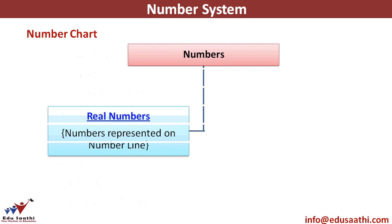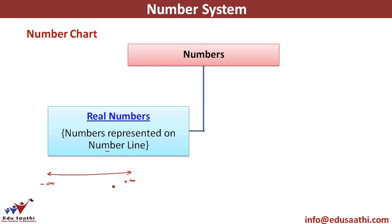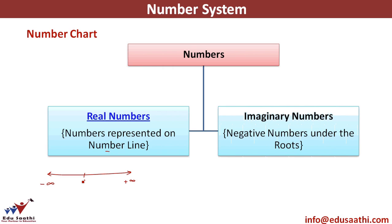Numbers can be divided into two categories: real numbers and imaginary numbers. Real numbers are numbers that can be represented on the number line — a line that extends from minus infinity to plus infinity with zero in the middle. Any number that can be represented on this number line is known as a real number.